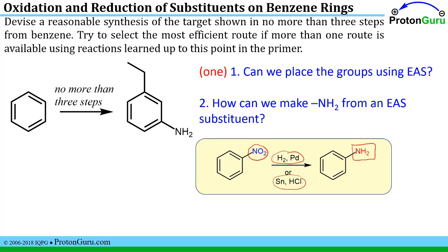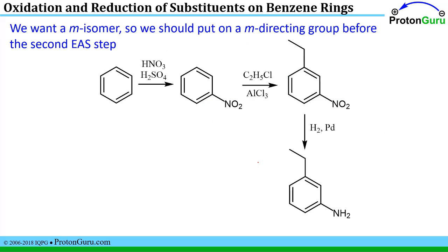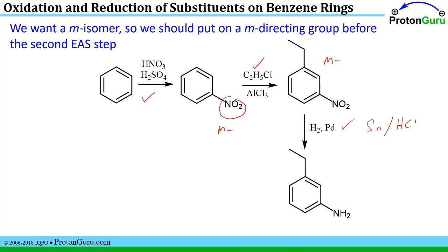Both reduction methods accomplish the same thing: removing the oxygens from the nitrogen and placing hydrogens there to give NH2. Once we figure out the type of chemistry we need, we figure out the correct order. We want a meta-isomer, so we need a meta-directing substituent in place first. Among the groups we'll encounter — NO2, NH2, and ethyl — the only meta-director is the nitro group. So we put that on first using nitration conditions. That directs the next group meta, so we put the ethyl group on at that point using Friedel-Crafts alkylation, then do the reduction to get our correct product.